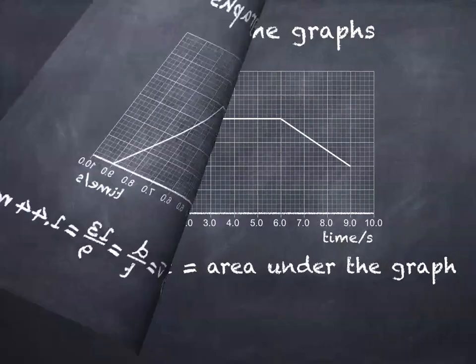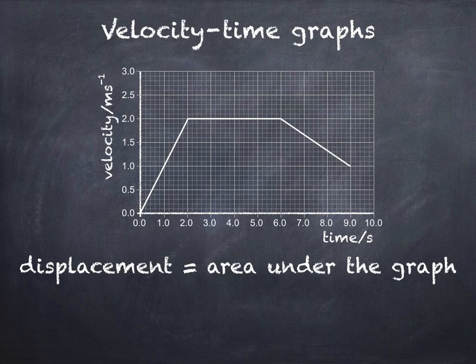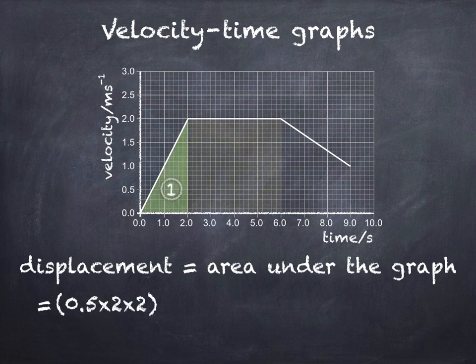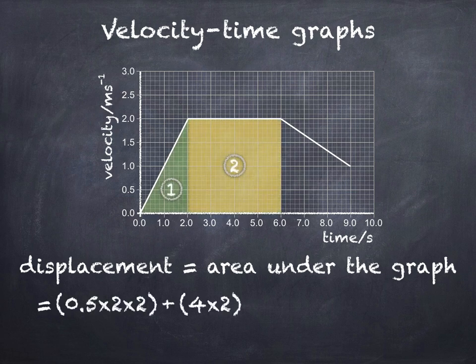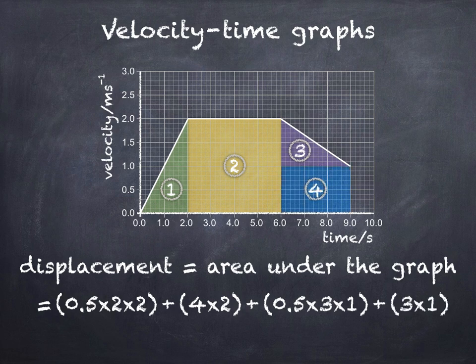Here I've made a slight change to the original graph. To find the total displacement, you'd now need to split the area under the graph into four sections: a triangle for the first 2 seconds, a rectangle from 2 to 6 seconds, a small triangle under the line for the final 3 seconds, and finally a rectangle under that. The total displacement would now be 14.5 meters. Just be careful reading the question, because sometimes you're only asked to find the displacement for part of the graph, and not the total time.